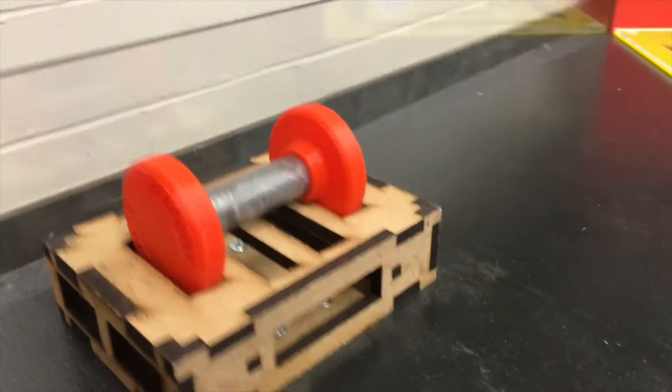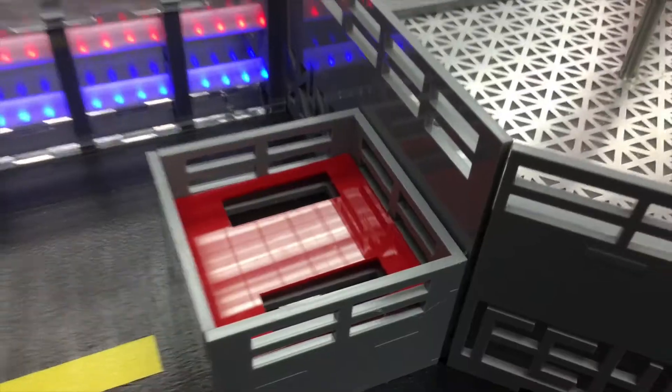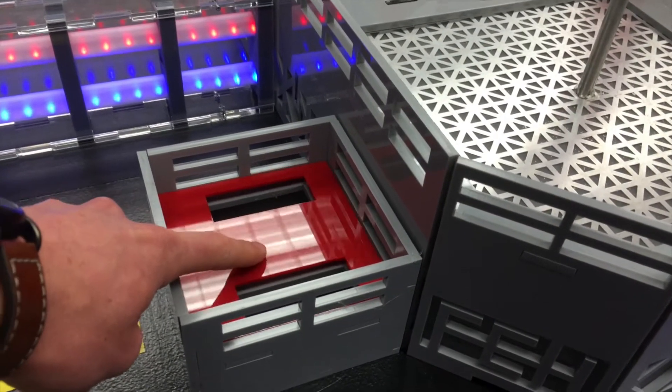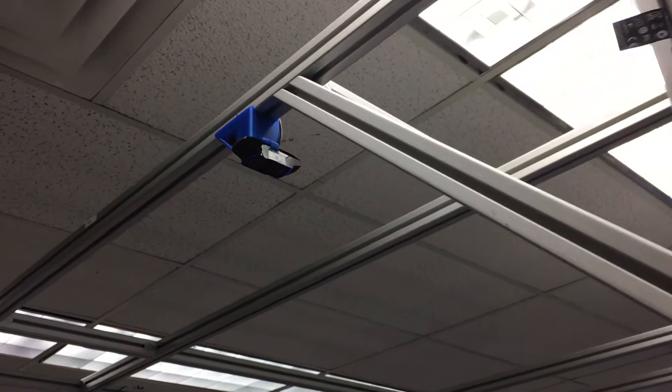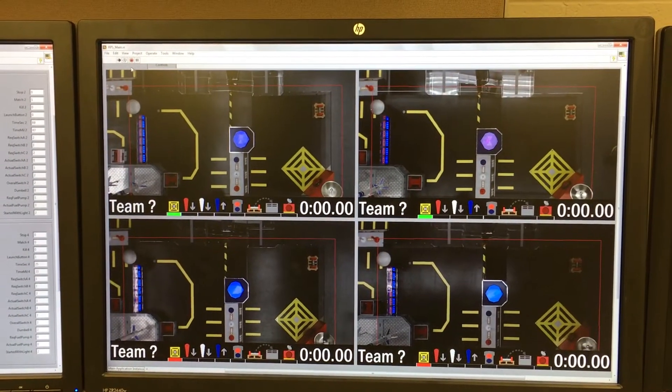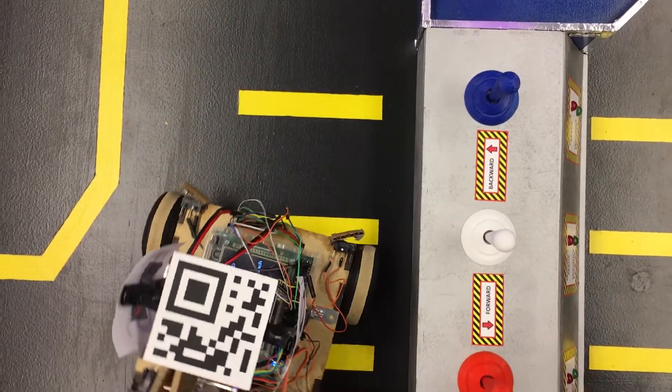A big goal for this year's course was to have automatic scoring so there are switches that know when the payload has been picked up and when the payload has been set back down. The robot positioning system or RPS has also been redone this year so we have cameras that look down at the course and identify the position of QR codes on top of the robots and then provide them with their position.